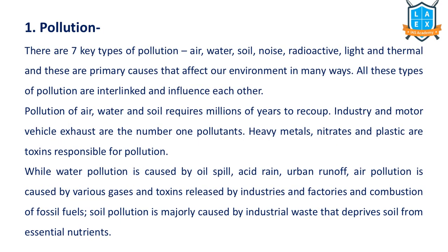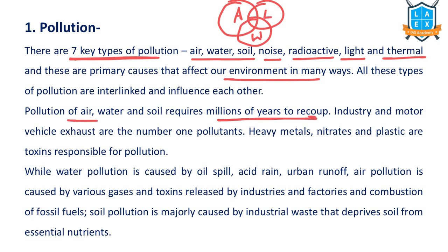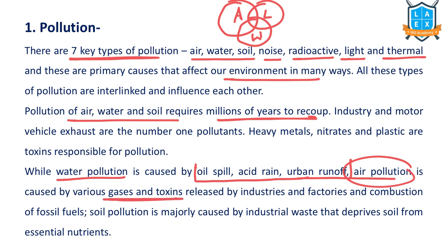The first issue is pollution. There are seven different types of pollution. We can broadly categorize them into three types: air pollution, land pollution, and water pollution. But other categories also include noise pollution, radioactive pollution, light pollution, and thermal pollution. These are all causing harmful effects on the environment. It takes millions of years to restore the natural ecosystem. Water pollution is caused by oil spills, acid rain, and urban runoff. Air pollution is caused by gases and toxins released by industries, factories, and the transport sector. Soil pollution is majorly by industrial and agricultural waste.